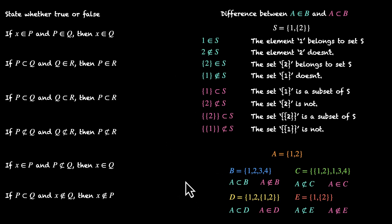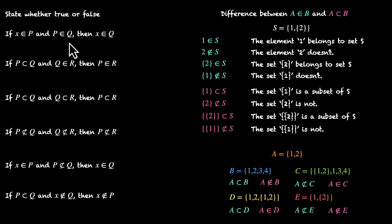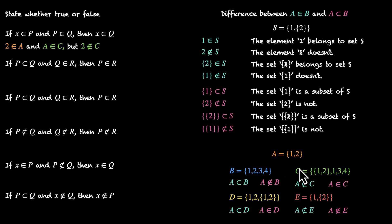Now that we have our foundations sorted, let's go back to the statements. Statement 1: if element x belongs to P and the set P belongs to Q, then x belongs to Q. Let's try proving this incorrect. Here's an example: 2 belongs to A and A belongs to C — you can find set A as an element of C. But element 2 does not belong to C. So 2 belongs to A, A belongs to C, but 2 does not belong to C. This means the statement is false.